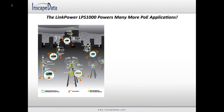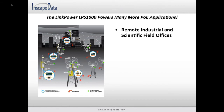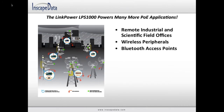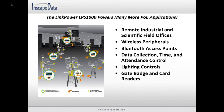The LPS 1000 Power over Ethernet offers great reliability, flexibility, and cost savings in deploying PoE equipment. Many more applications benefit from the LPS 1000 adjustable voltage switch, including remote industrial and scientific field offices, wireless peripherals, Bluetooth access points, data collection, time and attendance control, lighting controls, gate badge and card readers, RFID electronics, and many more.